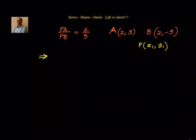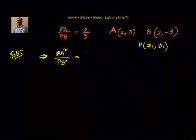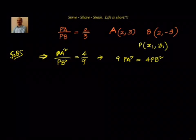So what we will do? We will square it on both sides — we will do cross multiplication. We will have PA squared divided by PB squared equal to 4 by 9, which gives us that 9 PA squared is equal to 4 PB squared. So, like earlier, first we will try to find out what is PA squared and PB squared.